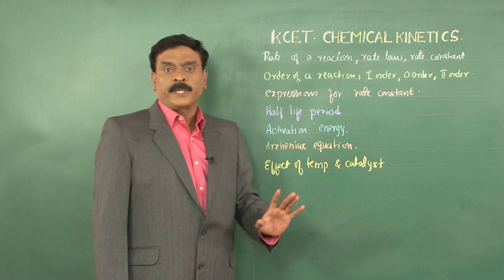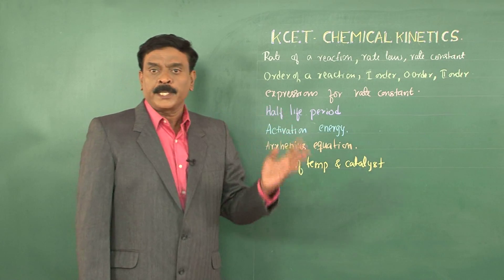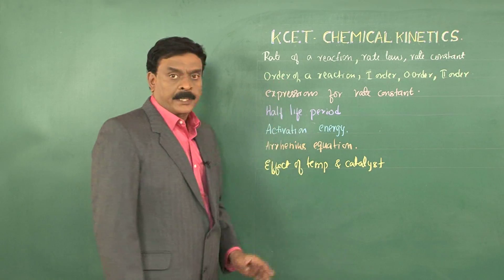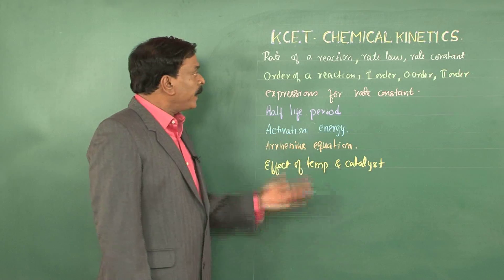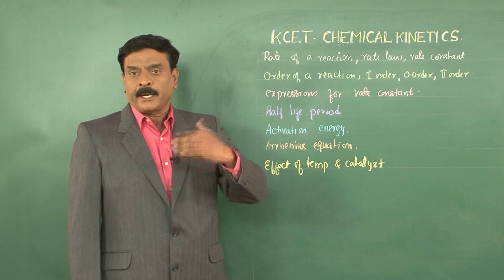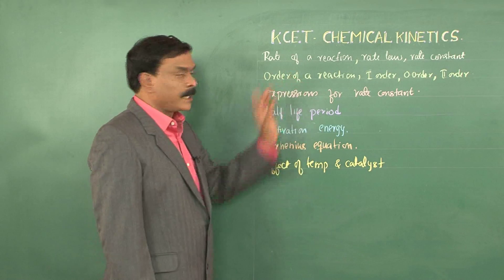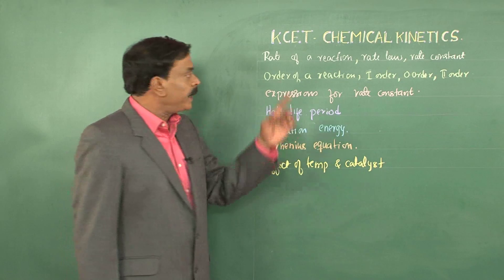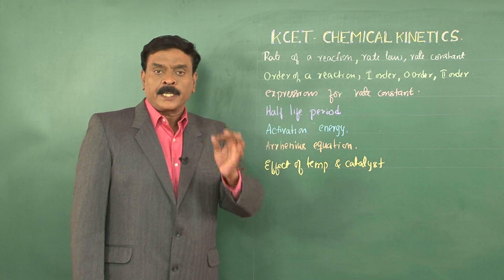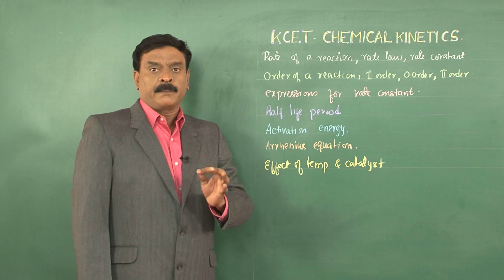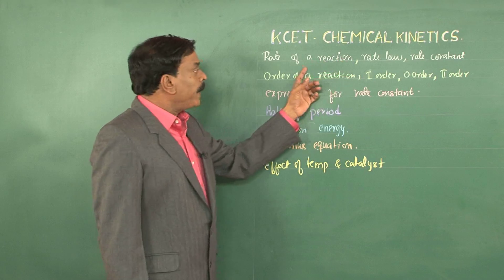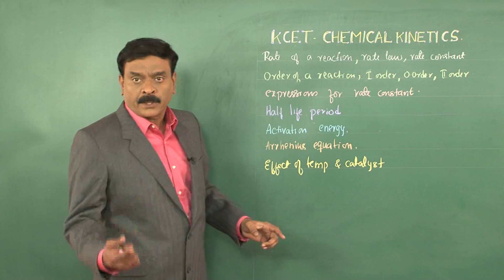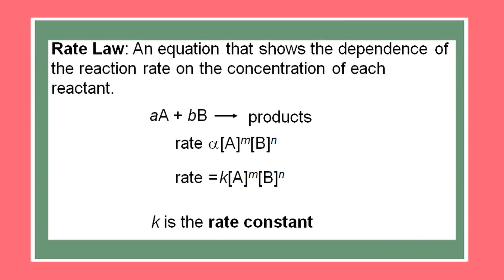Coming to rate of a reaction, there are two rates: instantaneous rate and average rate. When a reaction takes place, the concentration of the reactants goes on decreasing. Therefore, at every instant, the rate keeps changing. Whenever we measure the rate at a particular instant of time, we call it the instantaneous rate of a reaction. How the rate depends on concentration — that mathematical expression is given by the rate law.